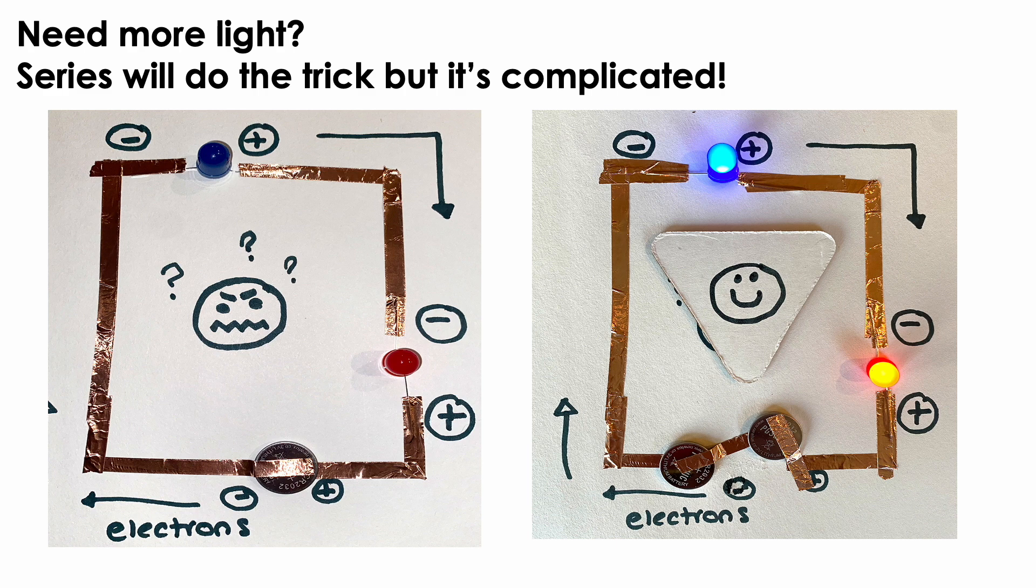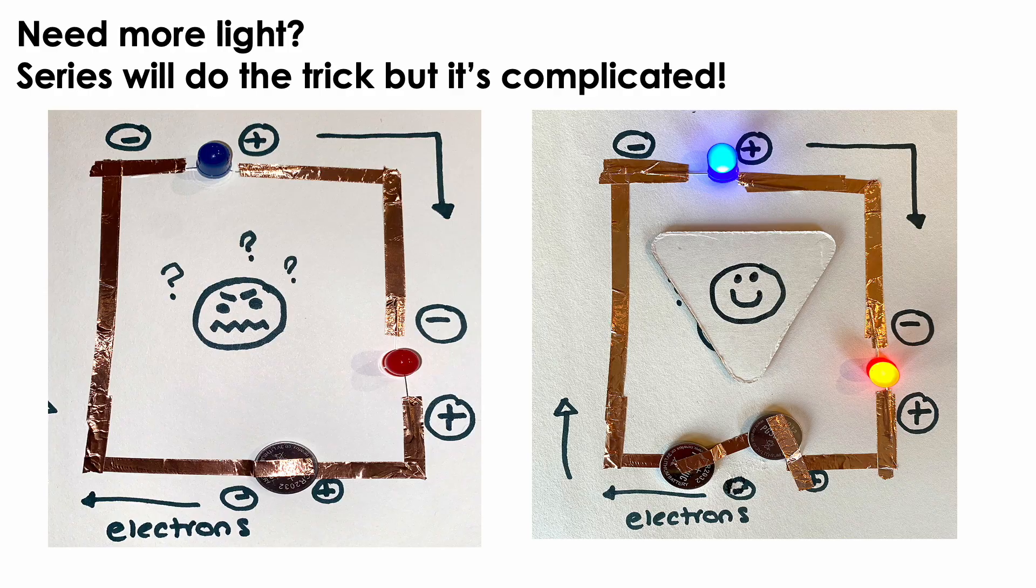So if you want to do it in series, as you can see on the left, the light's not going on. What we did was we actually added two batteries in series as well to double the amount of voltage and that did the trick and got both lights to work.